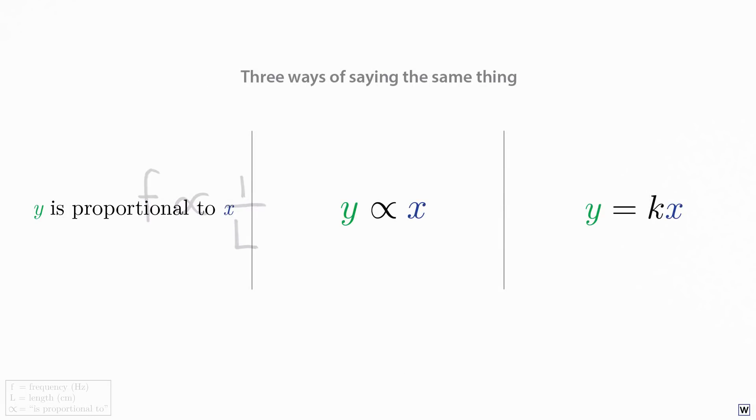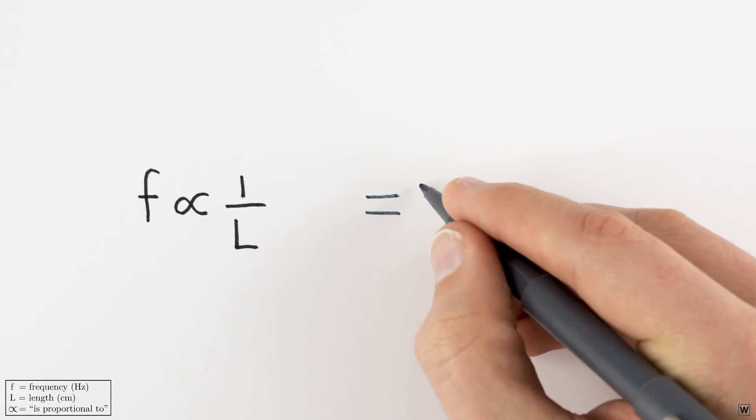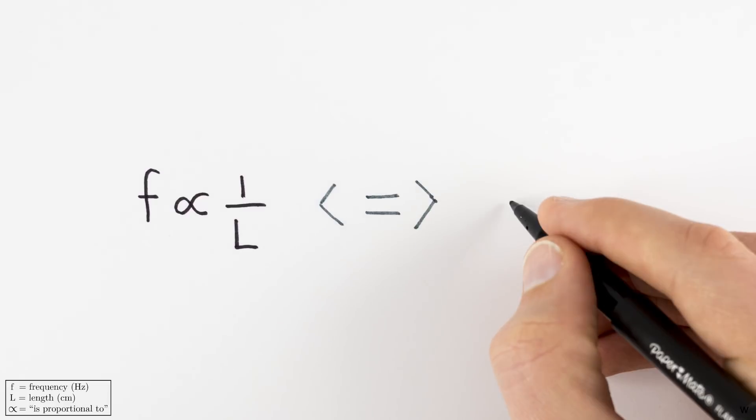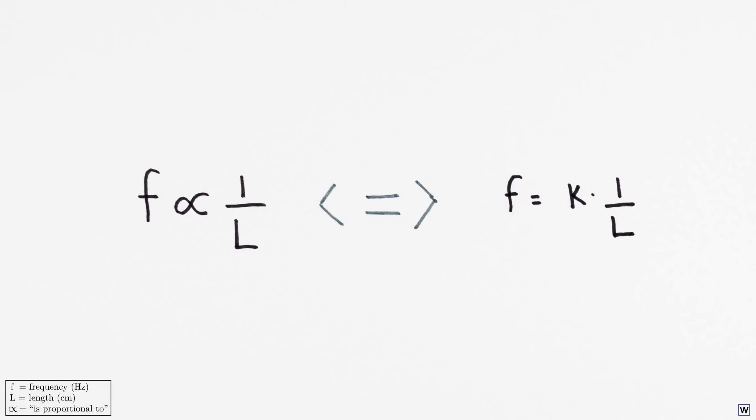Saying that one variable is proportional to another really just means that there's some constant out there, that when multiplied by one variable, gives us the other. If we call this constant of proportionality k, we can rewrite our statement of proportionality as an equation. f equals k times 1 over L. With one minor simplifying adjustment, we have f equals k divided by L. This equation says the same exact thing as our original proportionality statement, except now we've expressed our constant of proportionality k explicitly, making our relationship easier to work with.